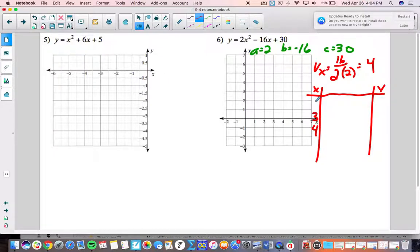Then we'll go 3 and 2 and 5 and 6. So we have 2 times 4 in parentheses squared minus 16 times 4 plus 30, and when you plug that into your calculator you'll get negative 2.